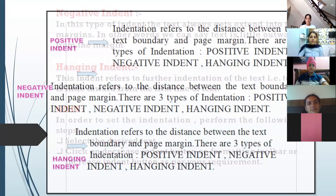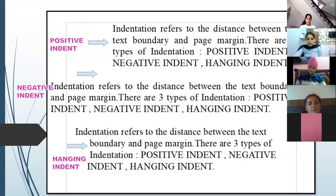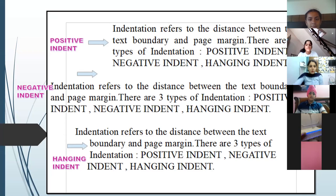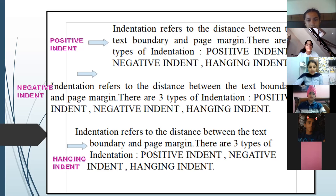Looking at examples of indents: the grayish color border is the paper edge — the paper boundary. The empty space on the left side is the left margin, and the space on the right side is the right margin, similarly top and bottom. Positive indent is where the text is extended inward from the margin. Negative indent is where the text flows outside the margin line. Hanging indent is where the first line is slightly outward and the rest of the text is on the same level.